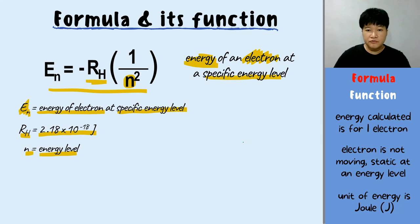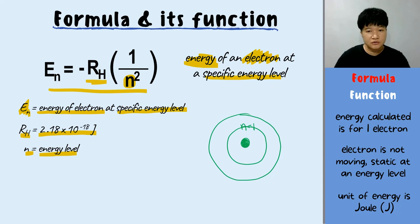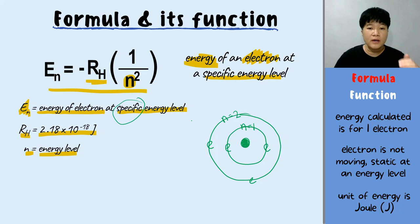According to the Bohr atomic model, there is a nucleus with energy levels: N equals 1 is closest to the nucleus, then N equals 2 further away. Electrons are located at these energy levels, and every electron sitting at an energy level will have a specific energy. We use this formula to calculate the energy of an electron at N equals 2 or N equals 1.